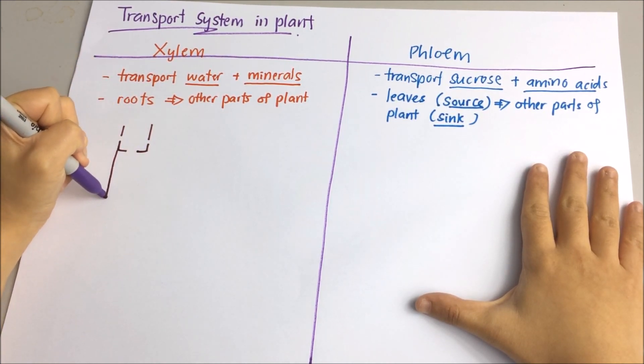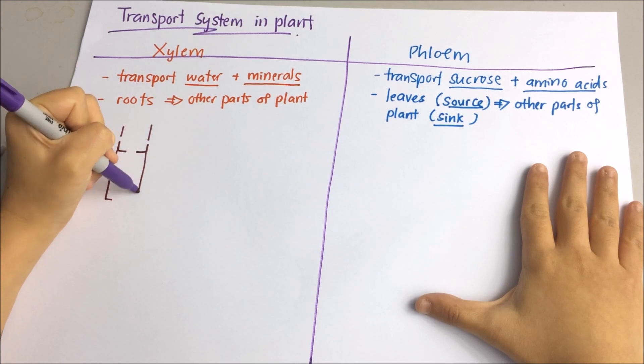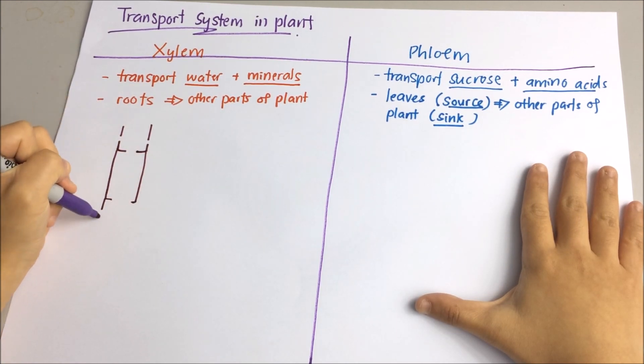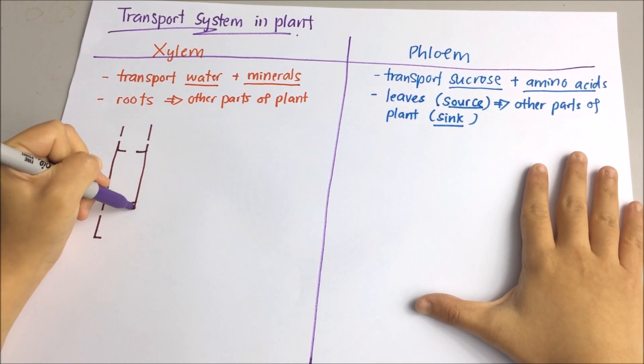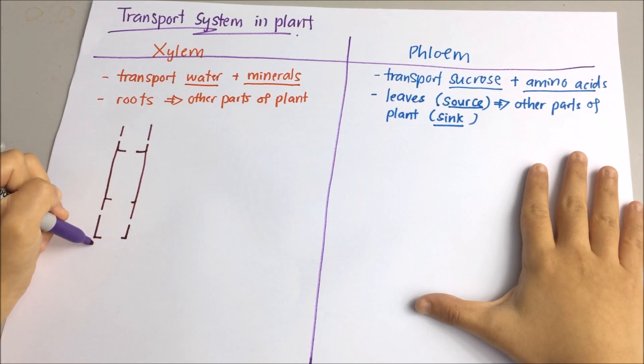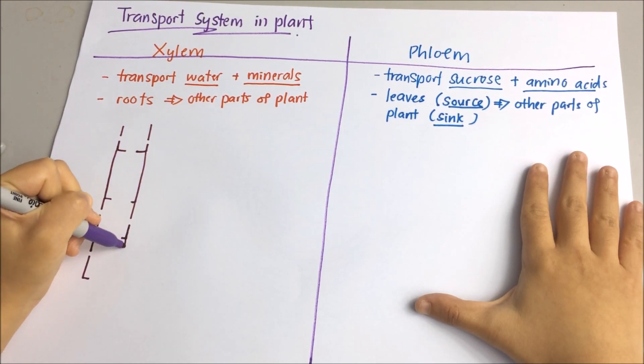The sink refers to areas of low sugar concentration, such as the growing tissues and roots. Here's a comparison between xylem and phloem. Xylem vessels are elongated cells arranged end to end, which allows water to flow in a continuous column.